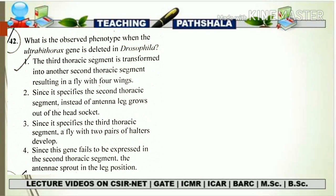If we talk about the genes expressed in the different thoracic segments: in T2, there is expression of Antennapedia, which is responsible for the development of one pair of legs and one pair of wings in the T2 segment. In the T3 segment, there is expression of the ultrabithorax gene, which is responsible for the development of one pair of legs and one pair of halteres.